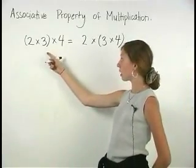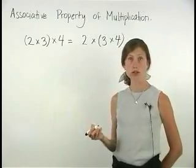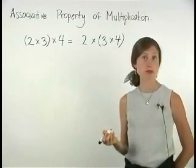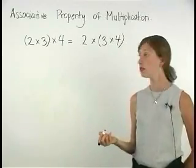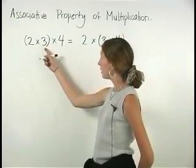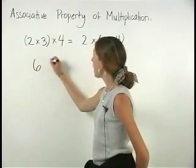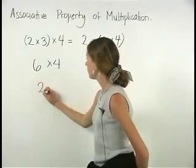So on the left side of this problem, according to the order of operations, we must first simplify inside the parentheses. So we have 2 times 3, which is 6, and 6 times 4, which is 24.